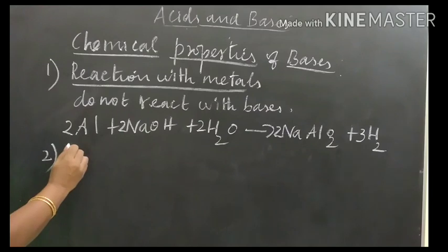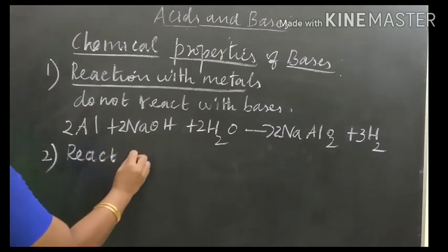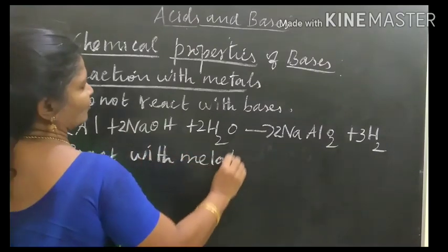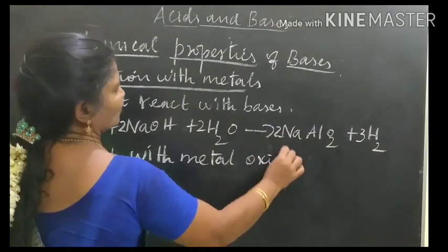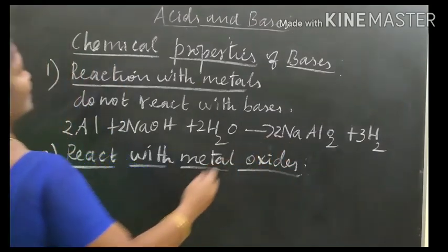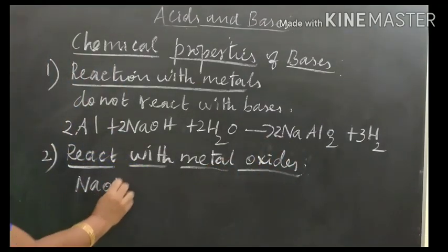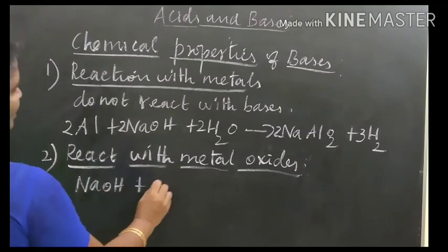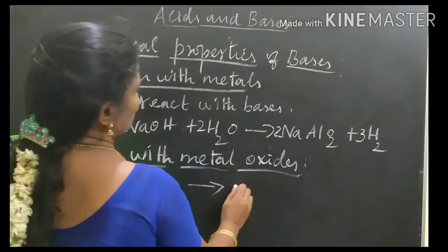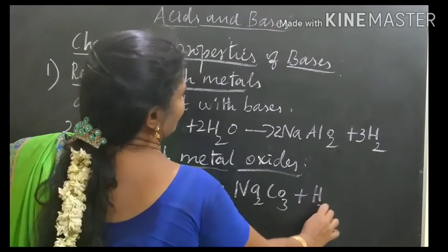Second: react with metal oxides. Sodium hydroxide reacts with carbon dioxide to form sodium carbonate and water. The equation: 2NaOH + CO₂ → Na₂CO₃ + H₂O. The equation is balanced.